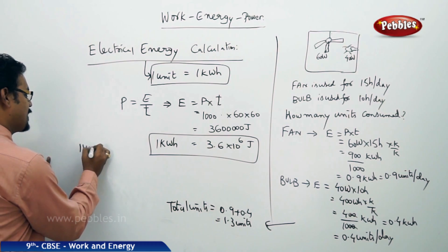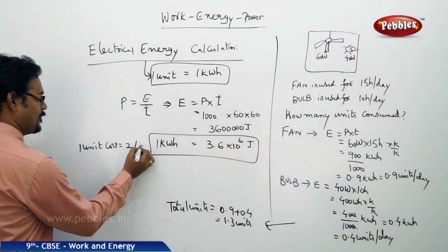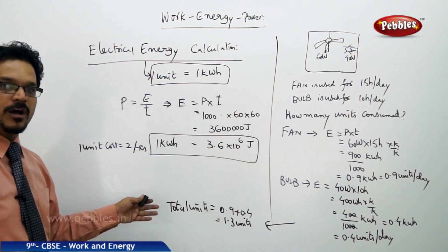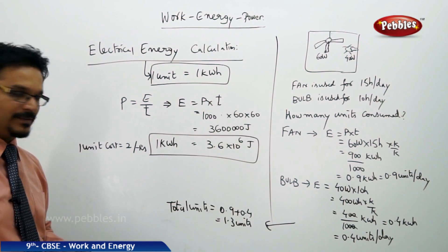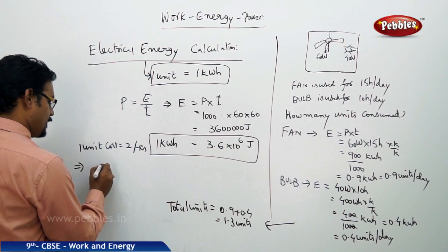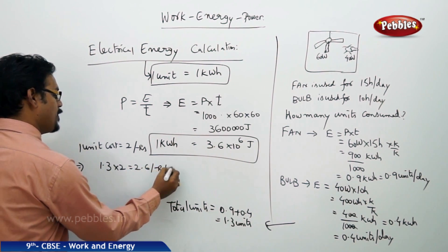1 unit cost equals to 2 rupees. Then how much he has to pay? Implies 1.3 into 2, which is 2.6 rupees per day.